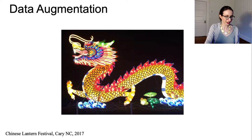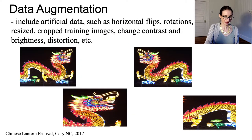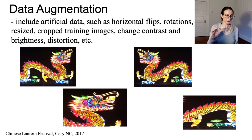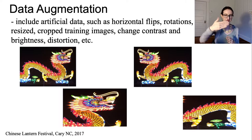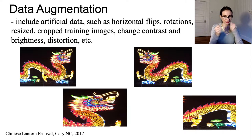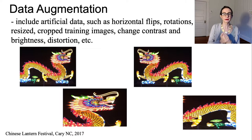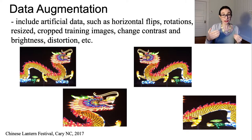Here's a picture of a dragon. What I can do to my data set is include new artificial data — I can horizontally flip my dragon because it's still a dragon when flipped. I can include slight rotations, resize the dragon, crop bits out, change the contrast, brightness, or distortion, because I'd like my neural network to identify the dragon despite all of those changes.